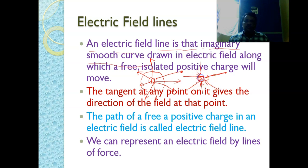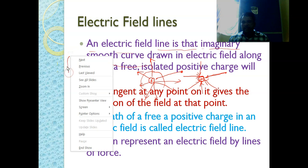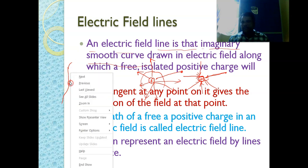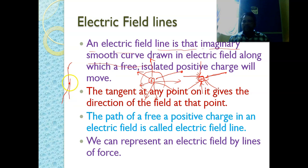The electric lines of force are the imaginary smooth curves drawn in an electric field along which a free isolated positive charge moves. If we know the electric field line and we draw a tangent at a particular point, the tangent gives the direction of the electric field at that point. The path of the free positive charge in an electric field is called the electric field line.